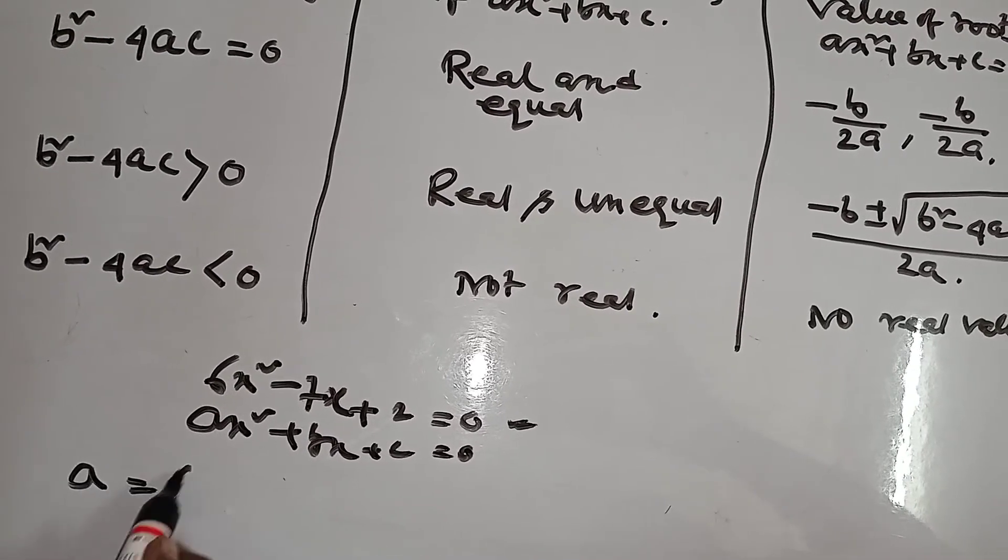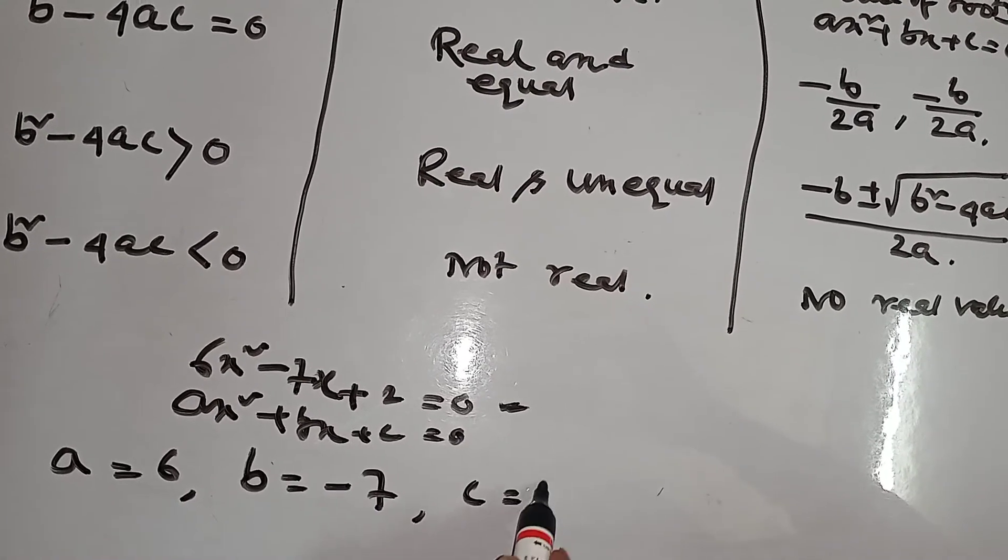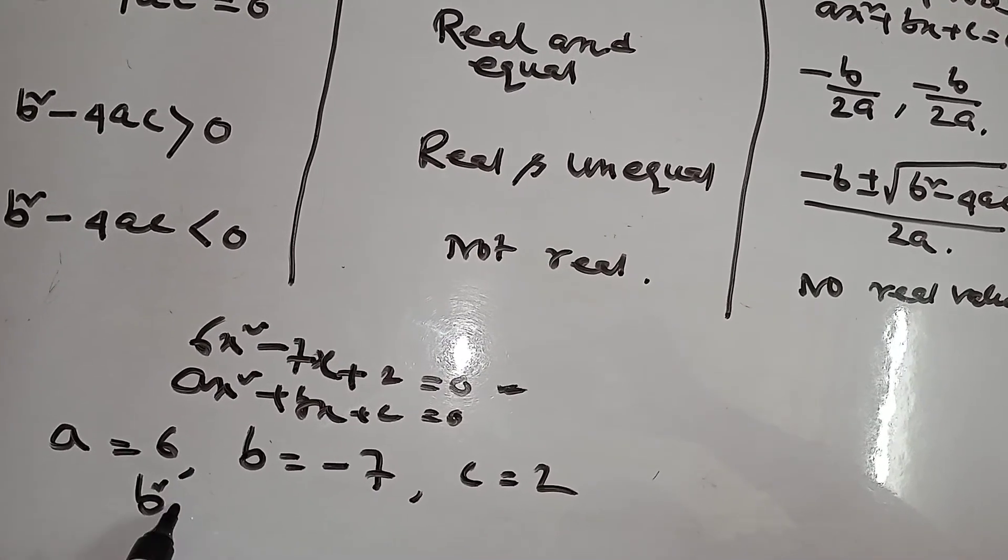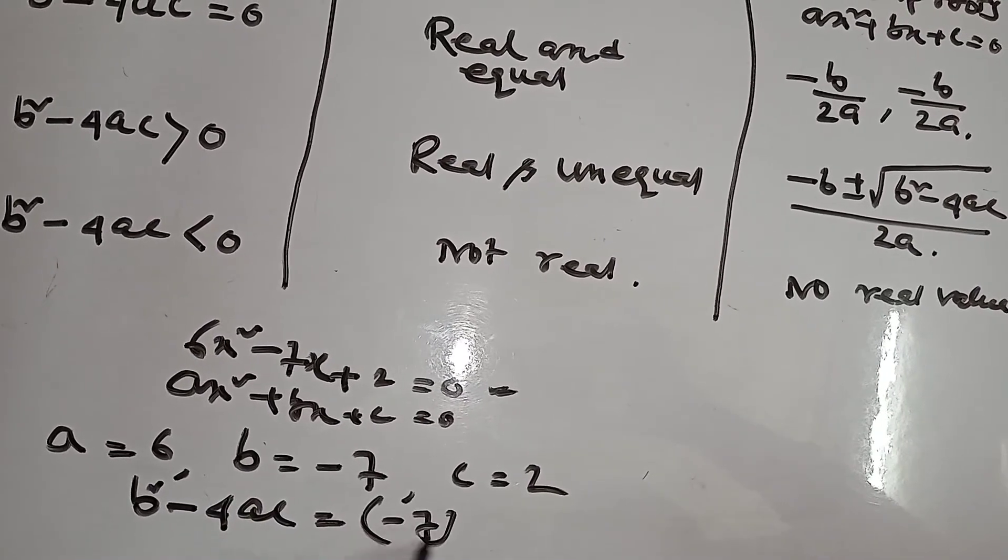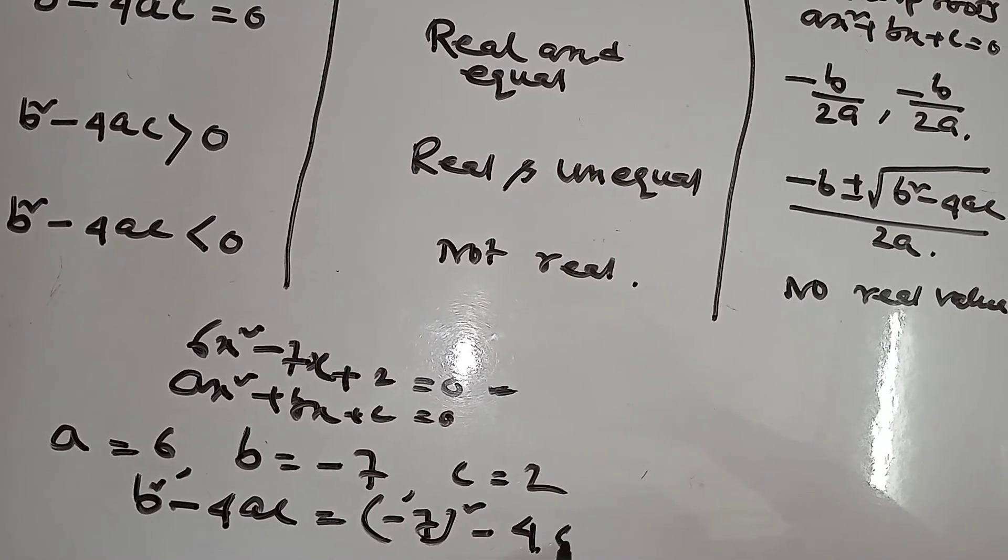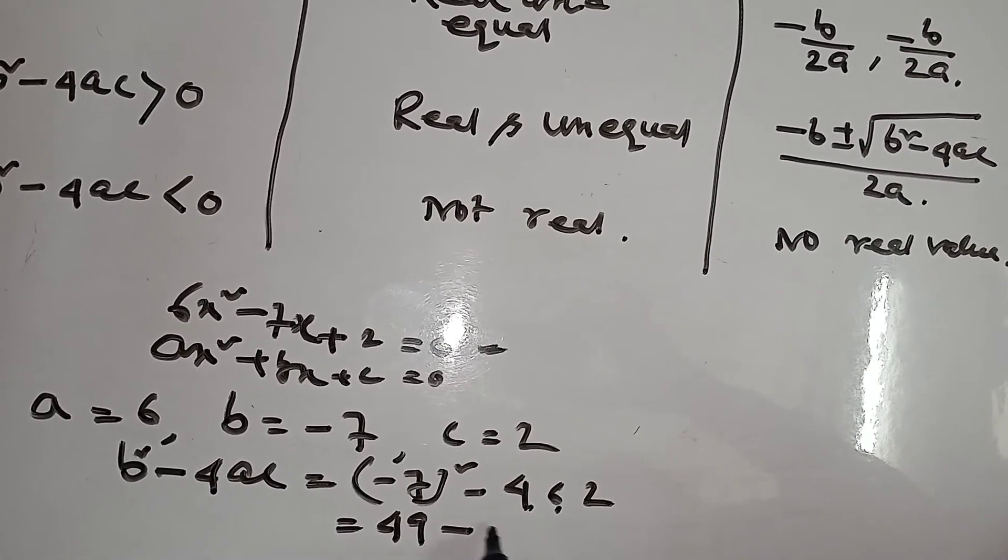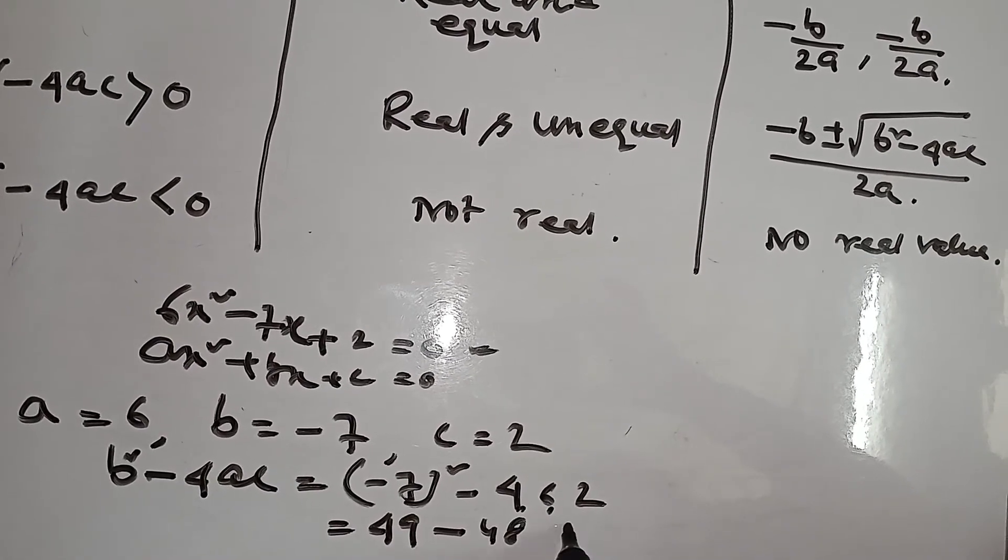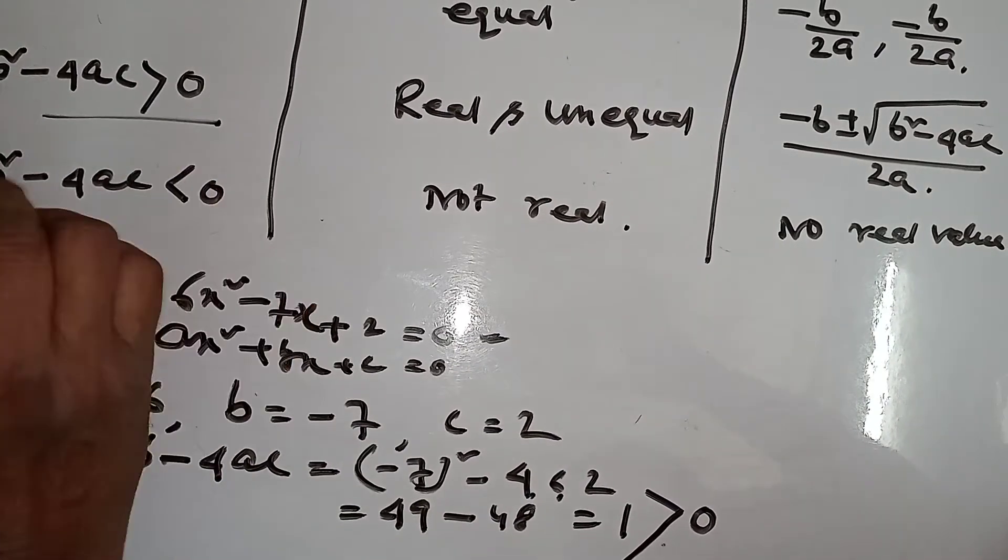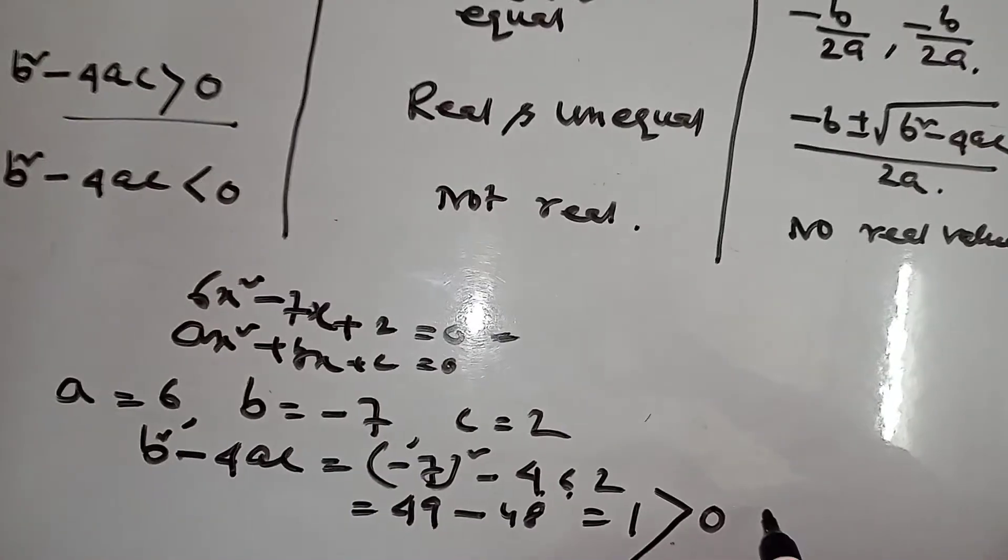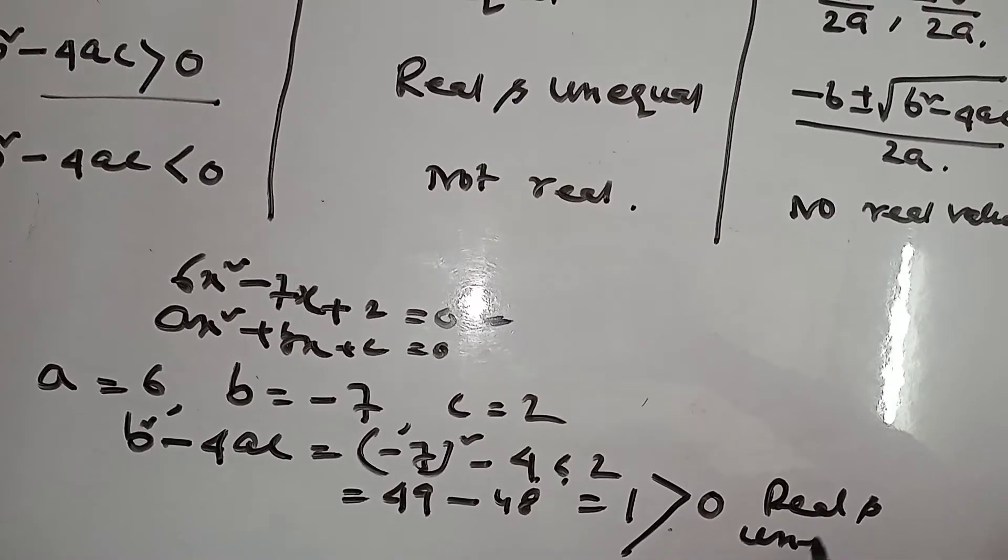a equals 6, b equals minus 7, c equals 2. Find b squared minus 4ac equal to minus 7 squared minus 4 into 6 into 2, which is 49 minus 48 equal to 1, which is greater than 0. That means real and unequal roots.